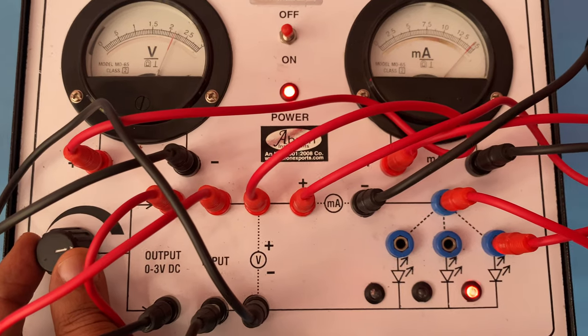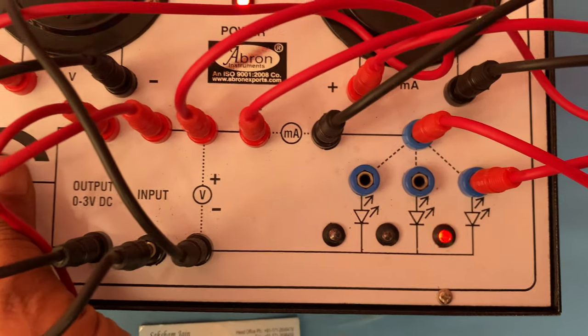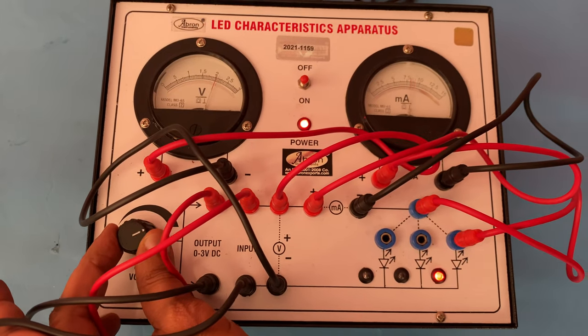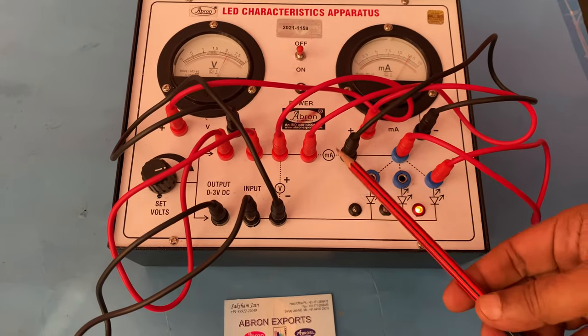This full brightness is there, you can see. Now I can increase and decrease, see this. You can check the current and check the voltage. Very easy instrument - can connect voltage and milliampere.